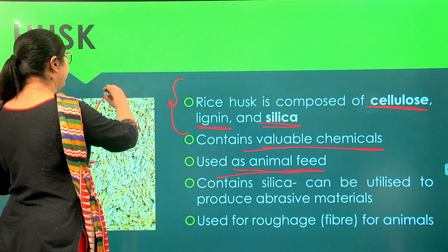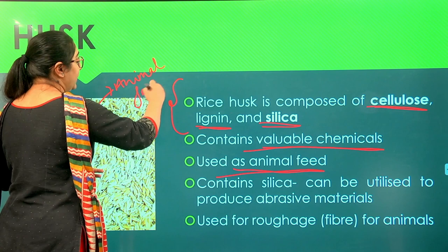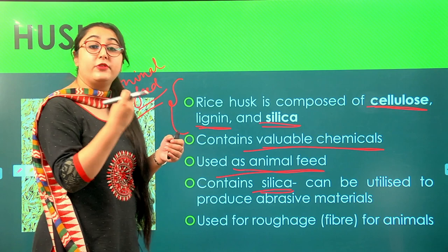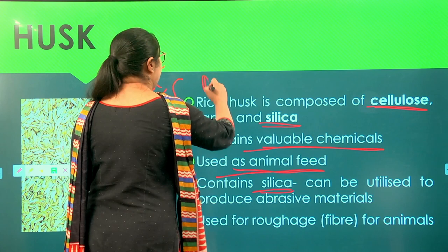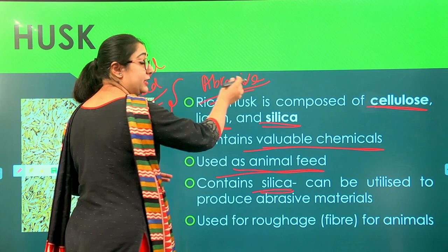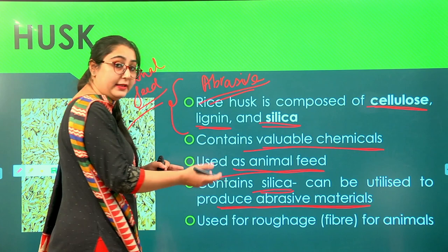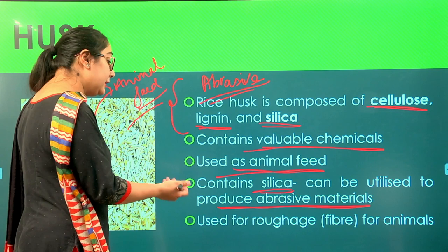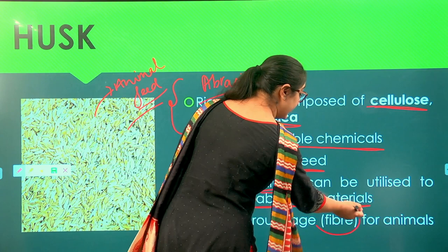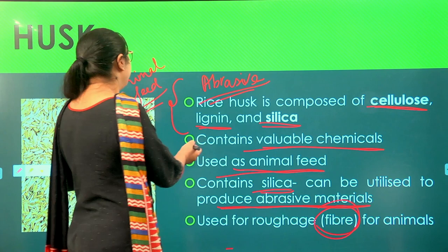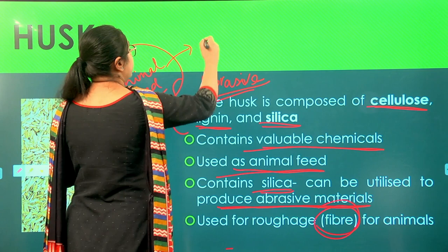Husk can be used for roughage because it contains a very large amount of fiber. Fiber aids in the feeling of fullness and is very good for health. This makes it even more valuable as animal feed, as high fiber content gives a filling feeling to animals for a longer time. It also contains certain valuable chemicals that add nutritional benefits.